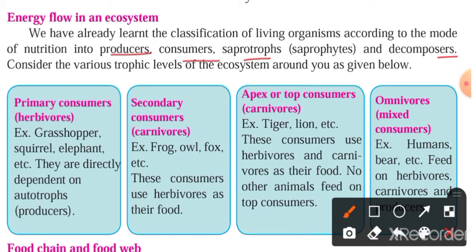Producers are plants — all plants are producers. Producers prepare their own food through photosynthesis using sunlight and abiotic factors.